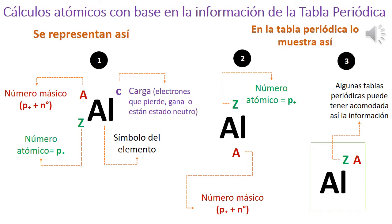Cuando se busca esta información en la tabla periódica, puede mostrarse de otra manera. Generalmente, la tabla periódica tiene en su parte superior el número atómico (Z) y en la parte inferior el número másico (protones más neutrones). Sin embargo, existen algunas tablas periódicas donde en la parte superior pueden aparecer ambos números, tanto el número másico como el número atómico.